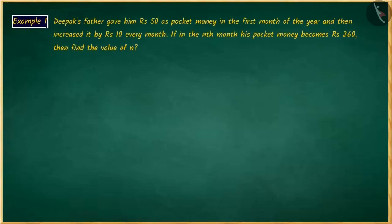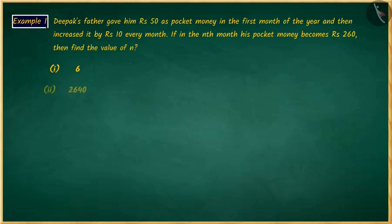Deepak's father started giving him Rs. 50 as pocket money in the first month of the year and then increased the monthly pocket money by Rs. 10. If in the nth month his pocket money becomes Rs. 260, then find the value of n.